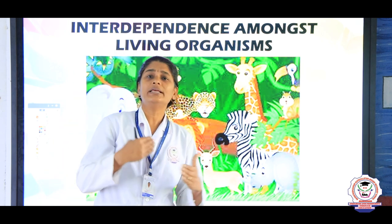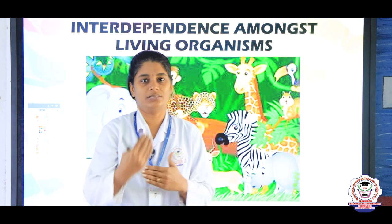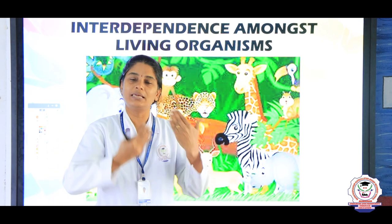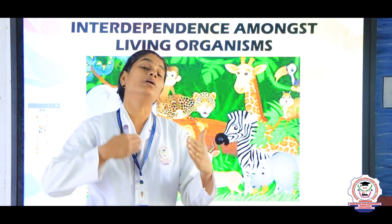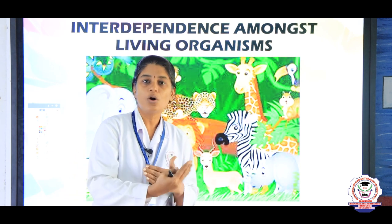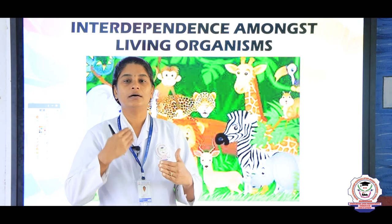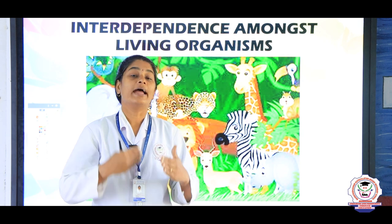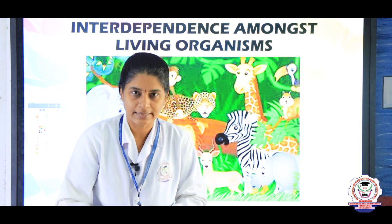We have already learnt that all living things depend on each other. No living thing cannot survive by itself. All living things depend on other living organisms either directly or indirectly. For instance, a deer eats grass and a lion or a tiger eats deer.